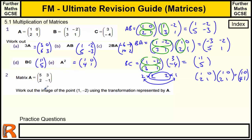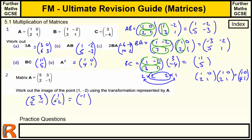The next question asks us to work out the image of the point (1, -2) using the transformation represented by A. We multiply A by the column vector representing this point — that is, (1; -2). So 5 times 1 plus 3 times -2 equals 5 minus 6, which is -1. And 2 times 1 plus -1 times -2 equals 2 plus 2, which is 4. So the image of the point (1, -2) is the point (-1, 4). We convert the coordinate into a column vector and multiply by the matrix.